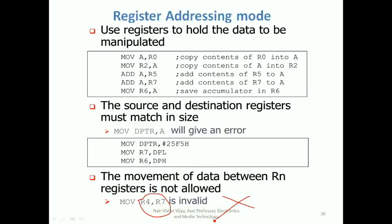Two registers should have compatibility in their bit width. If one register is 8-bit, the other register should also be 8-bit. You cannot transfer the data pointer's content directly to the accumulator. You can transfer data pointer high or data pointer low's content because they are 8-bit, but the data pointer as a whole is 16-bit. These are some limitations you should keep in mind.